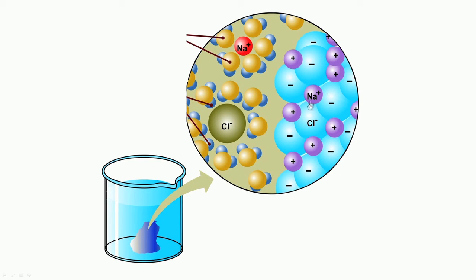Let us look at an example of what happens when common salt dissolves in water. As you all know, common salt is NaCl. When it is dissolved in water, it splits up into its ions Na+ and Cl-. Na gets surrounded by a set of water molecules, and Cl gets surrounded by another set of water molecules oriented differently. Na is positively charged and therefore a certain orientation happens to the molecules of water that surround it, which is different from the orientation around Cl. Any substance that dissolves in water needs to have a set of water molecules that surround it — that is essentially what dissolution is at a molecular scale.